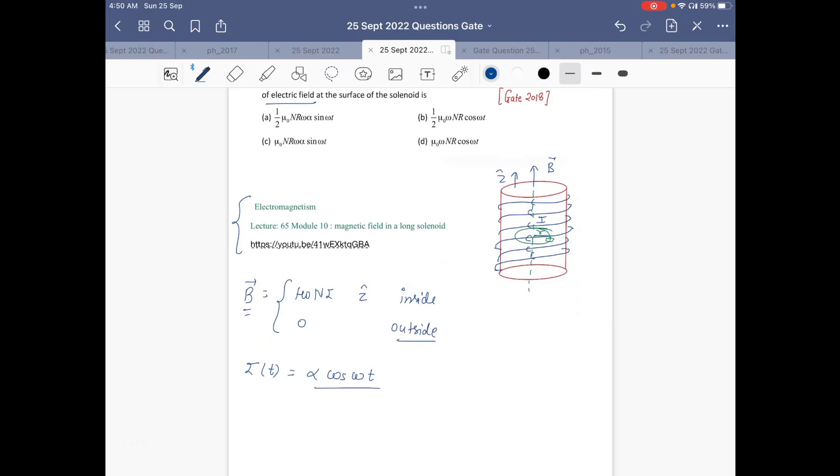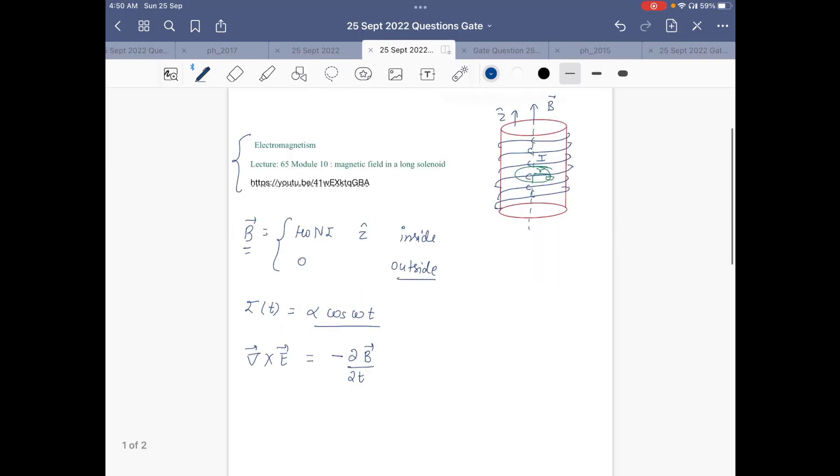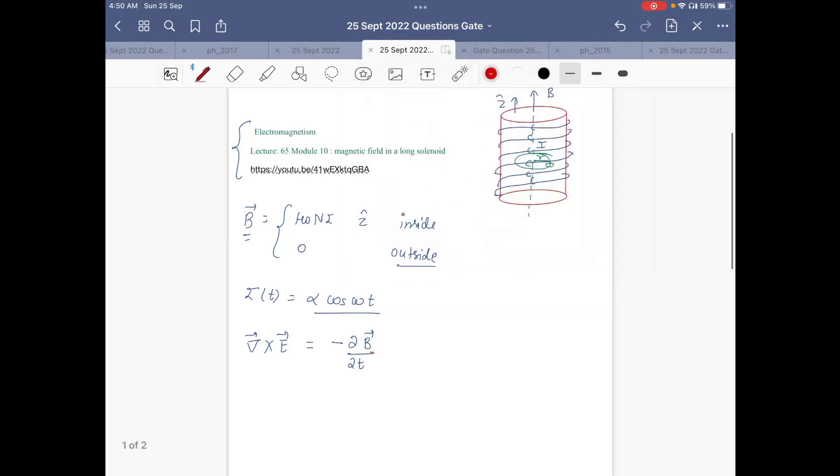And whenever there is a change in magnetic field, it will induce the electric field which is given by Maxwell's third equation, which says that curl of E is equal to minus ∂B/∂t. So basically we have to calculate what is the electric field due to this change in magnetic field, which is occurred due to the change in current.